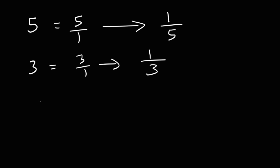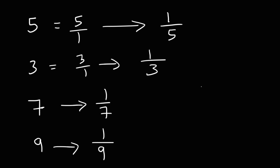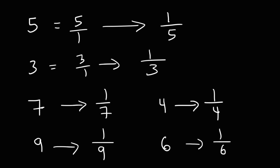The reciprocal of 7 is simply 1 over 7. The reciprocal of 9 is 1 over 9. The reciprocal of 4 is 1 over 4, and the reciprocal of 6 is 1 over 6. That's how you can quickly find the reciprocal of a whole number.